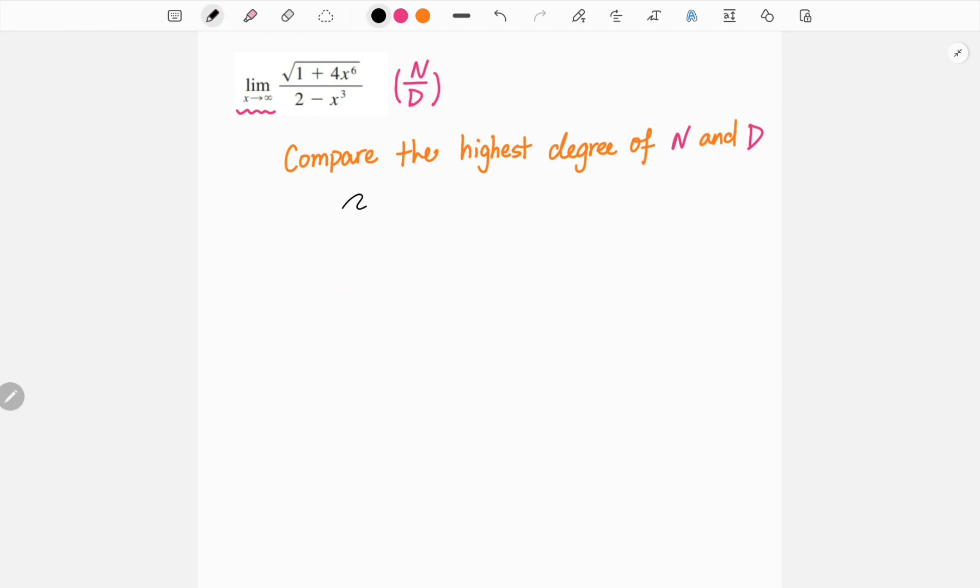Okay, so now let's look back to our original equation. Here, let's look at the highest degree of our numerator. You might say it's 4x to the 6, but be careful here since we have a square root sign. We want to first open up the square root.